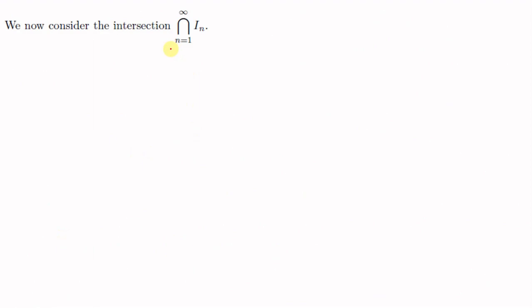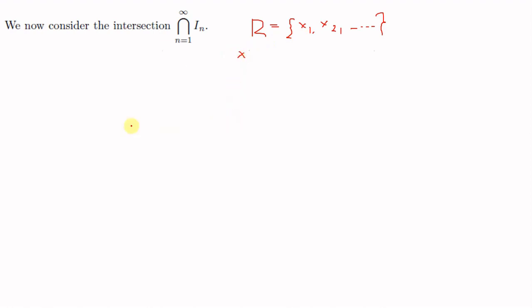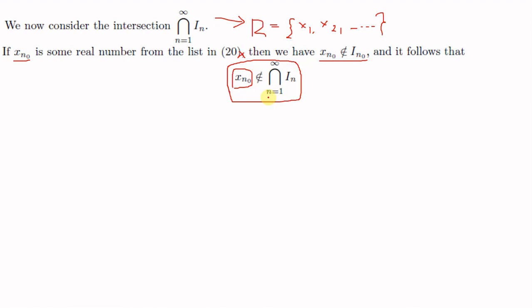Consider the infinite intersection ⋂ₙ₌₁^∞ Iₙ. Take any element xₙ₀ from the listing of R. By construction, xₙ₀ is not in Iₙ₀, so xₙ₀ is not in the infinite intersection. Since xₙ₀ was arbitrary, none of the elements of R belong to this intersection, which means the intersection must be empty.